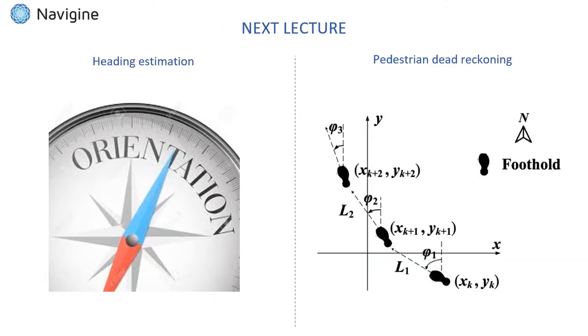This concludes the pedometer discussion. In our next lecture, we will show how a complementary filter can be applied to estimate device orientation based on readings from gyroscope and magnetometer, and how one can combine the pedometer and complementary filter in a pedestrian dead reckoning algorithm to reconstruct a person's trajectory without any additional information.